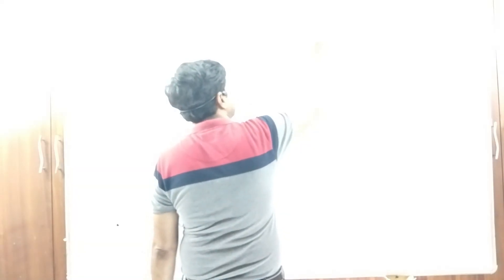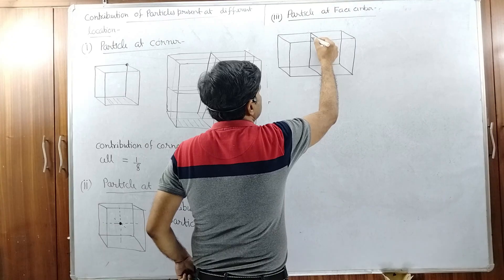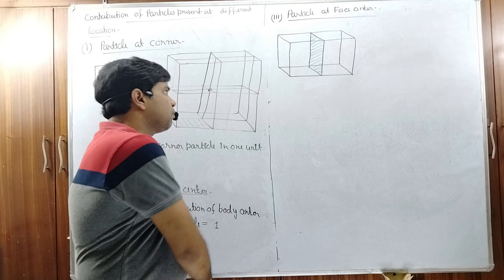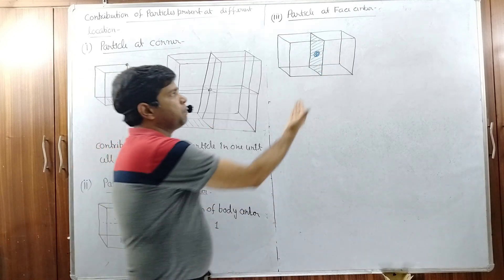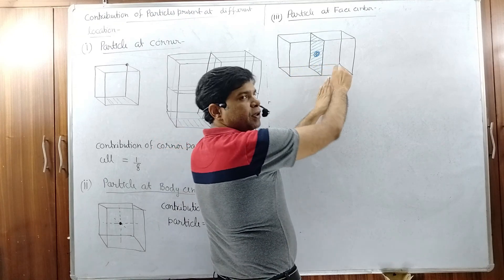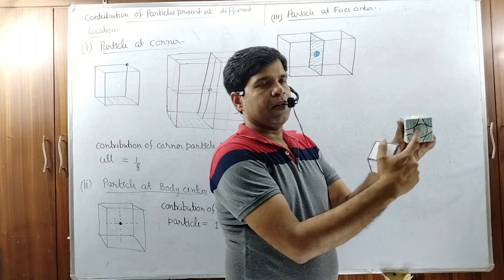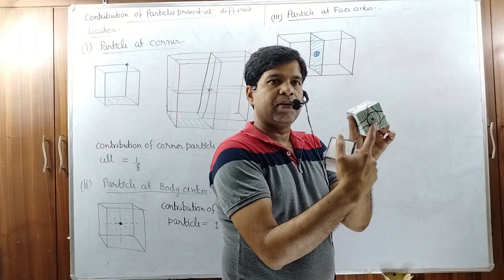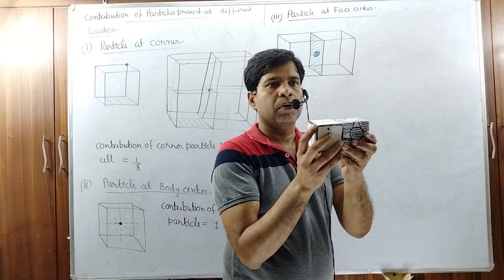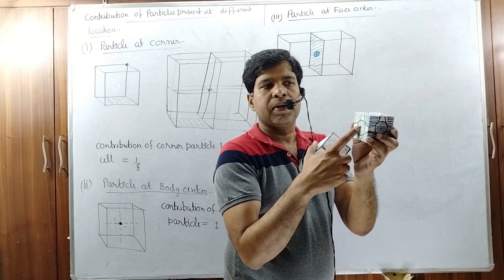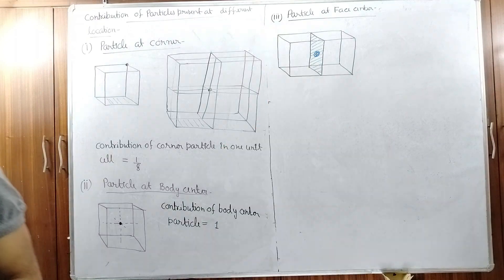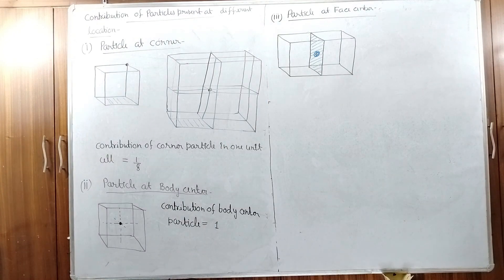For a particle at the face center, consider two unit cells sharing one common face. A particle on this common face is 50% present in box number one and 50% present in box number two. So every particle at the face center contributes only half — 1/2 — to one unit cell.